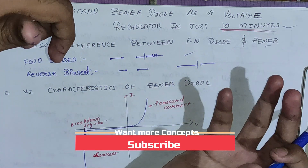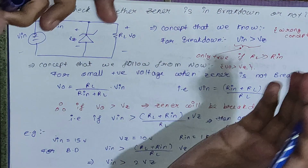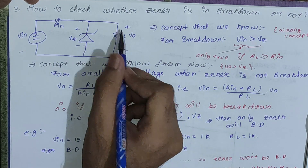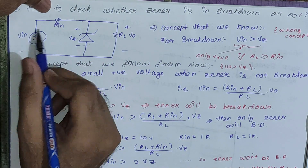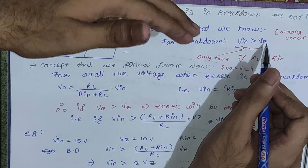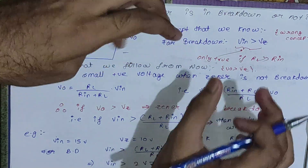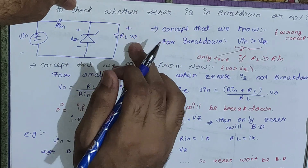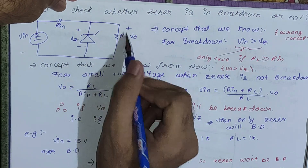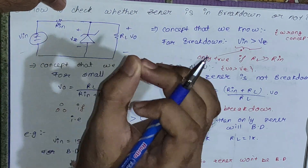Now we can start with the voltage regulator. We need to check whether the Zener diode is in breakdown or not. In the basic Zener diode regulator circuit, you have the Zener diode, a load resistor RL, an input resistor Rin, and the input voltage. The common concept is that for breakdown, Vin must be greater than Vz, but this is only partially correct — it holds only when RL is much greater than Rin, because then most voltage drops across RL and Rin acts nearly as a short circuit.